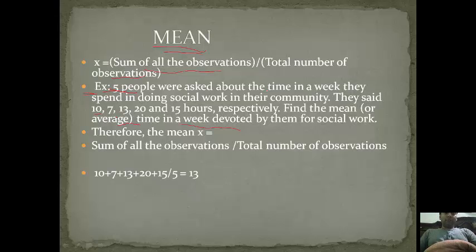As we know, mean or average equals sum of all observations. So observation is 10 plus 7 plus 13 plus 20 plus 15, that is 65. Total number of observations is 5. So 65 divided by 5 equals 13. Clear?